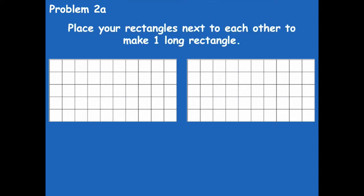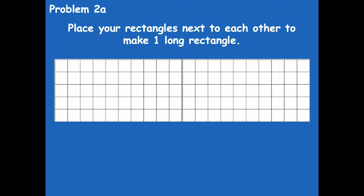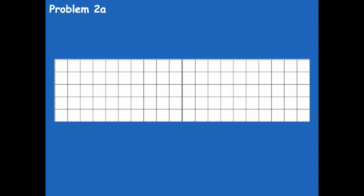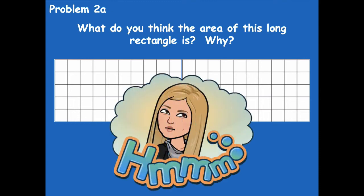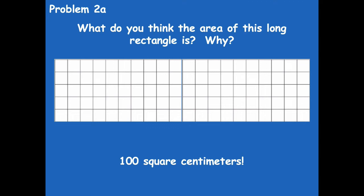Now we're going to place your rectangles next to each other to make one long rectangle — push them together. Now I have one long one because I just put them together. Make sure they're not overlapping. What do you think the area of this long rectangle is and why? It's 100 square centimeters — because the two rectangles were the same and we just pushed them together, so adding those two rectangles gives us the same as the one long one. 100 square centimeters is the area of this long rectangle.